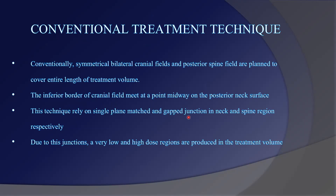Conventionally, symmetrical bilateral cranial fields and posterior spine fields are planned to cover the entire length of the treatment volume. The inferior border of the cranial field meets at the midway point on the posterior neck surface. This technique relies on a single plane match-and-gap junction in the neck and spine region. Due to this junction, very low and high dose regions are produced in the treatment volume. In the past, CSI was mostly treated on Cobalt-60 machines with symmetric JAWS and no MLC, so they had to shift the junctions. Later, when asymmetric jaws became available, junctions could be shifted using the jaw model instead of moving the isocenter.